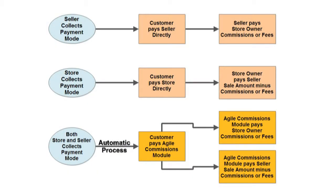This simple flow chart shows the three basic options for payment collection mode. In the first, Seller Collects Payment Mode, the customer pays the seller directly, then the seller pays the store owner any fees or commissions due. For the second option, Store Collects Payment Mode, the customer pays the store directly, then the store owner pays the seller any sale amounts minus any fees or commissions. For the third option, funds are collected by both the store owner and seller using the Agile Seller Commissions Module to automatically separate the appropriate payments, and the Agile PayPal Adaptive Module performing the funds transfer to both accounts simultaneously.